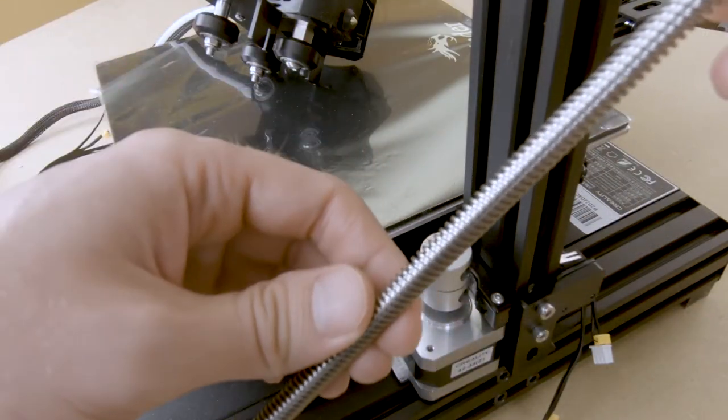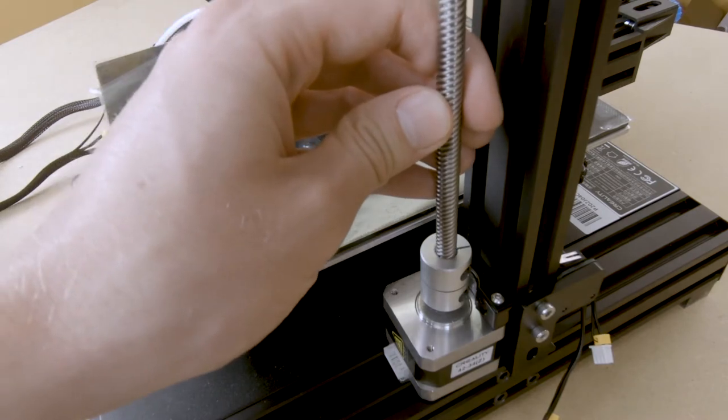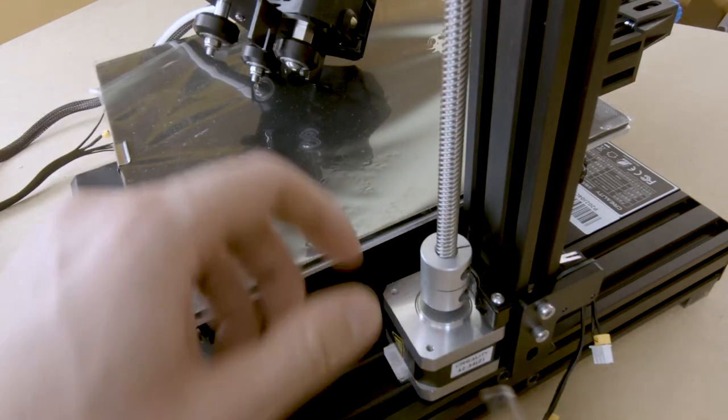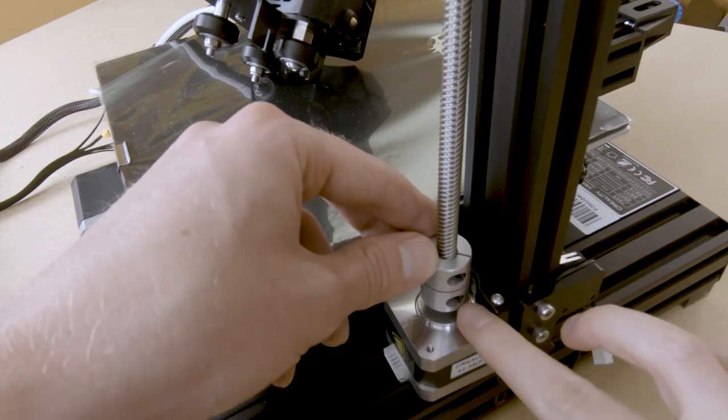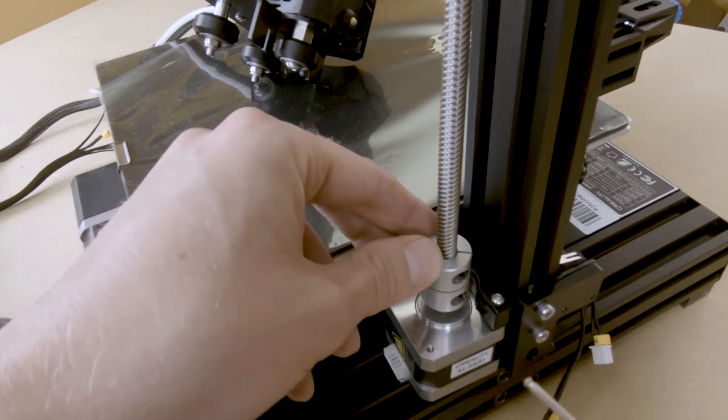Next, we're going to take our Z-screw and put it into the Z-motor. We're going to tighten it up using the top Allen bolt here. This bottom one, we do not need to tighten up for this.